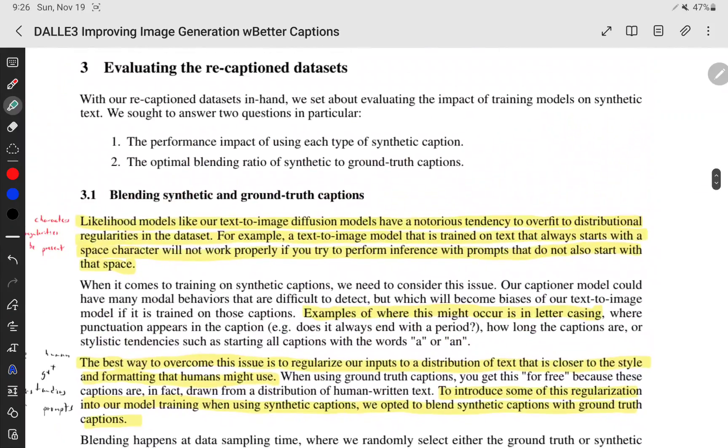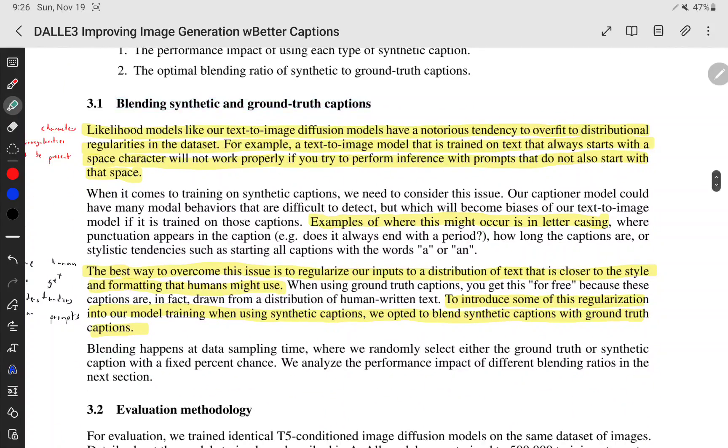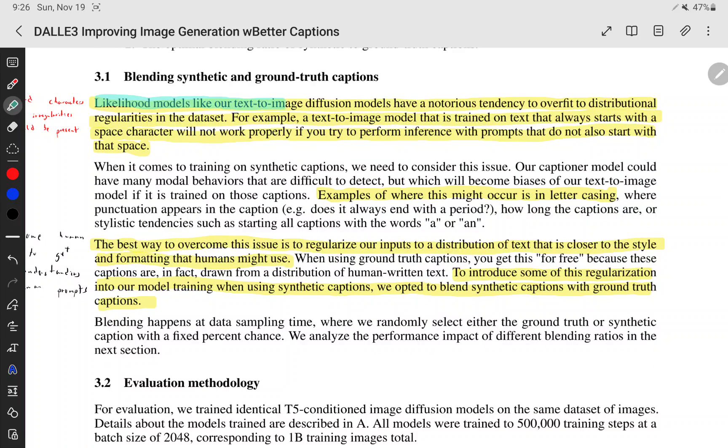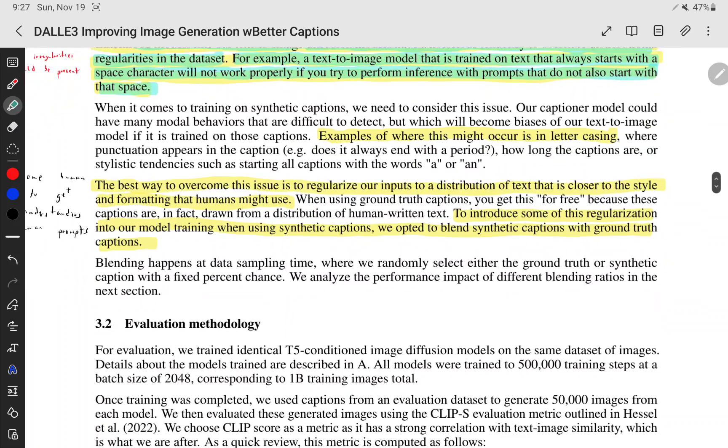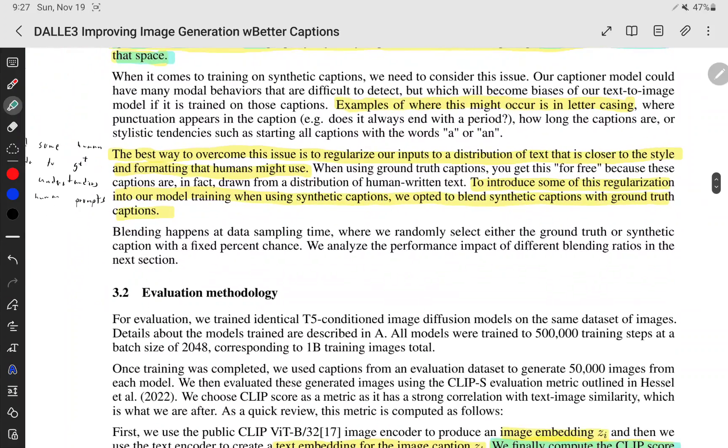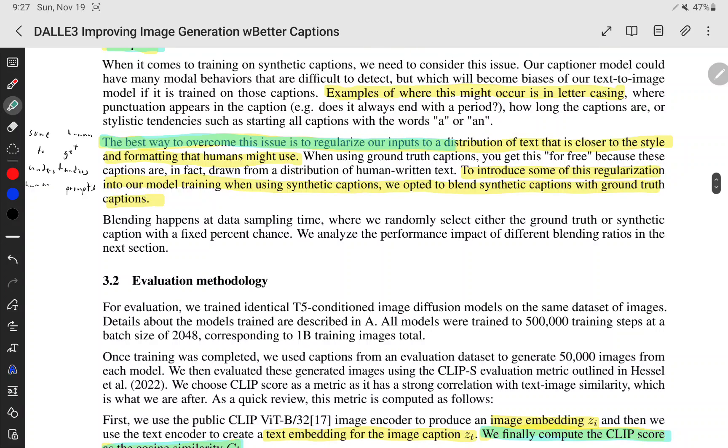They also mentioned that they have to blend synthetic data and the ground truth captions. They mentioned that likelihood models, like the text-to-image diffusion models, have notorious tendency to overfit to distribution error regularities in the dataset. For example, a text-to-image model that is trained on text that always starts with the space character will not work properly, especially if you perform inference with prompts that do not also start without space. So, there may be some weird bias in the data, in the generated data, that like you just, it's hard to spot. So, instead, they just train, they subset a part of the data to be human data.